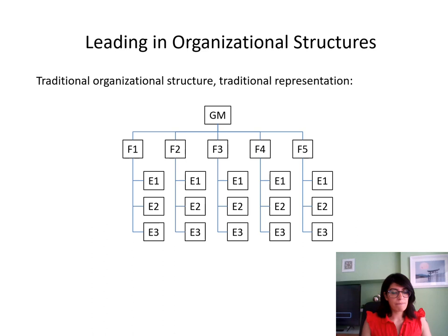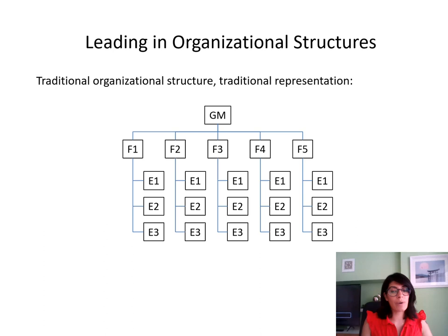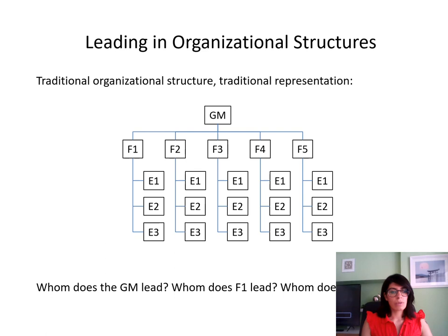Let's have a look at a traditional structure represented for an organisation. You effectively have the general manager, CEO or owner at the top, a leadership team underneath, and that leadership team each have teams of their own — quite a complicated structure. When it comes to leadership, who does the GM need, and who do the people in various positions need? Do those in certain roles also have leadership roles? How is the responsibility of leadership distributed across this particular organisational structure?